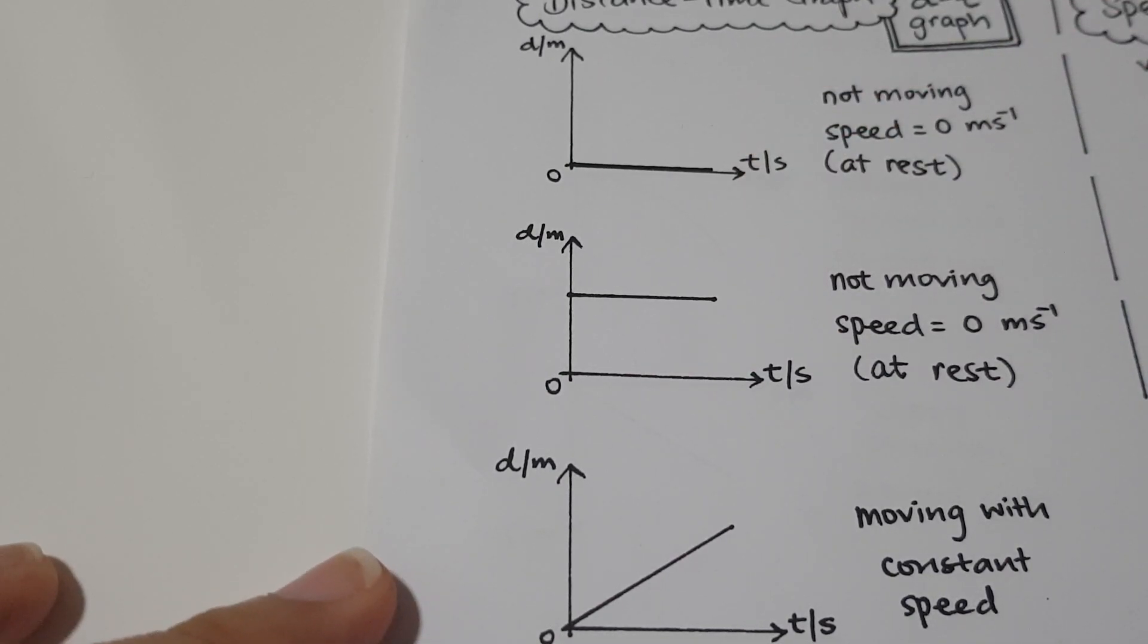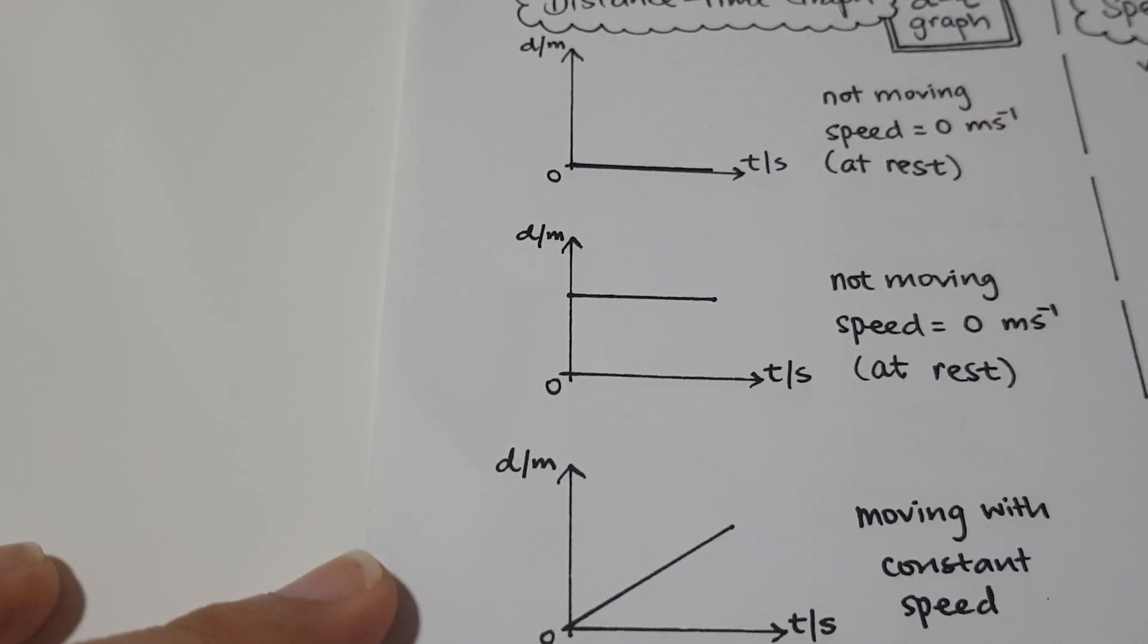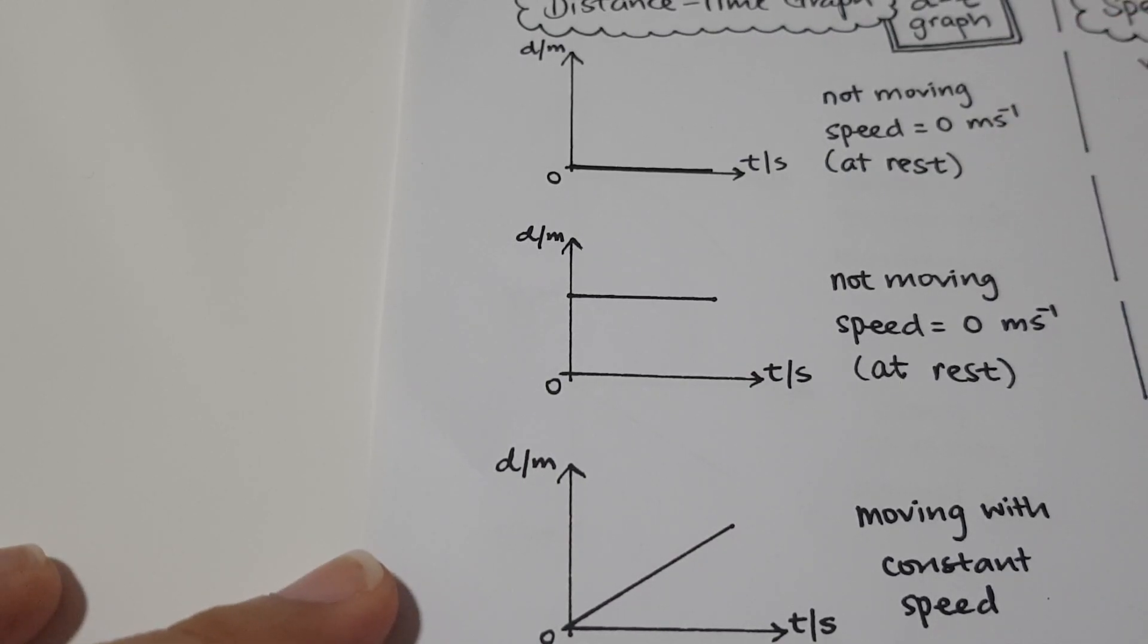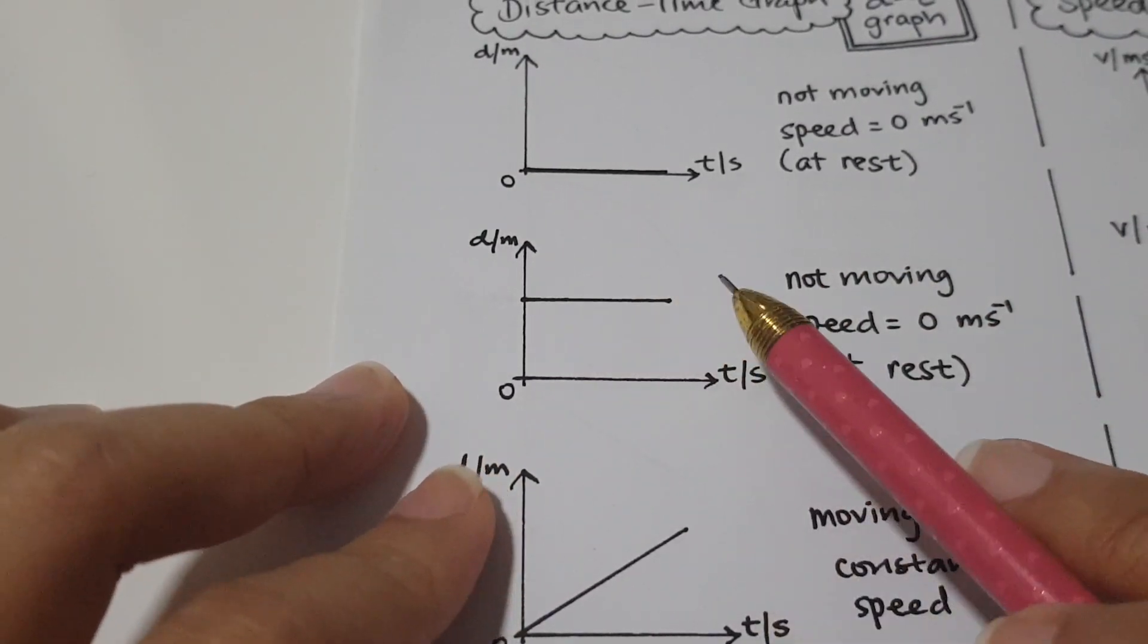So if the distance traveled is 0 meters, then it's not moving at all. It's at rest and the speed is 0 meters per second. Next, we're going to look at the straight line that is flat like this.